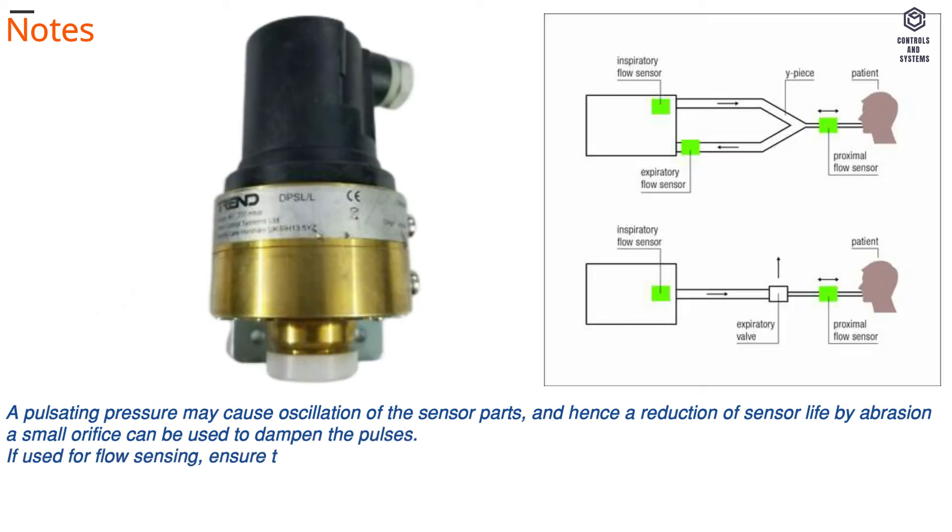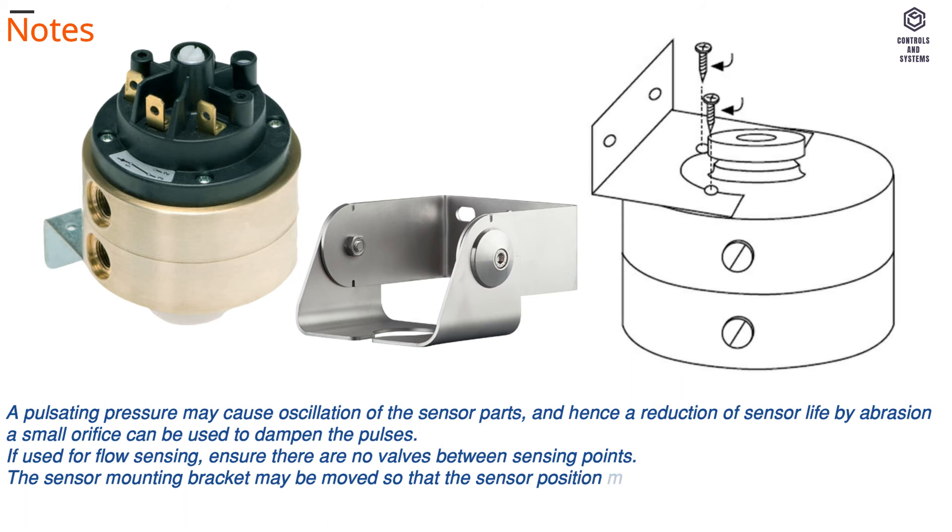If used for flow sensing, ensure there are no valves between sensing points. The sensor mounting bracket may be moved so that the sensor position may be rotated about its central axis before mounting.